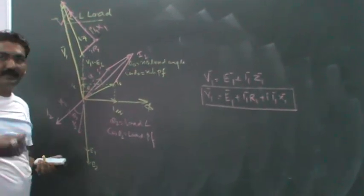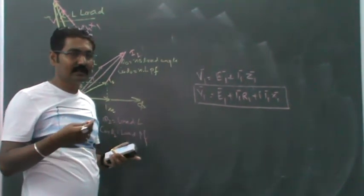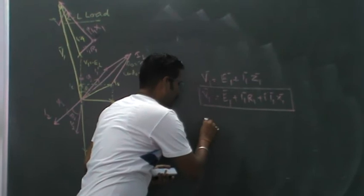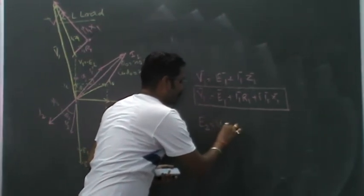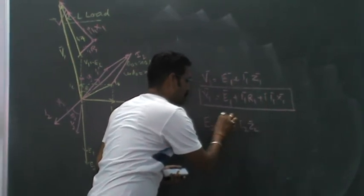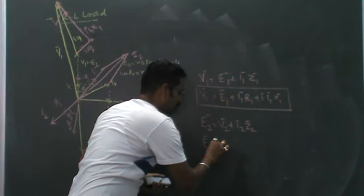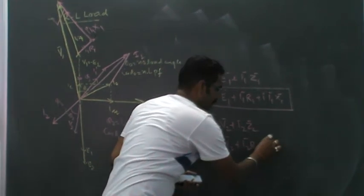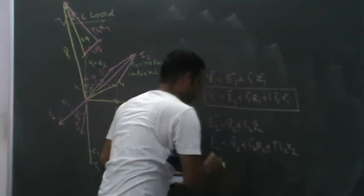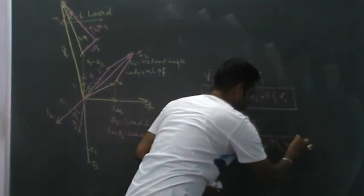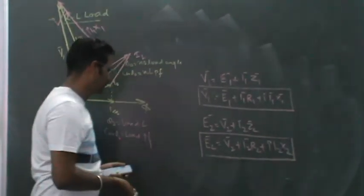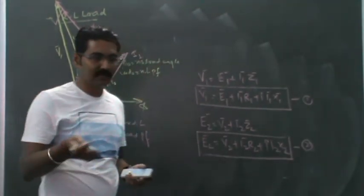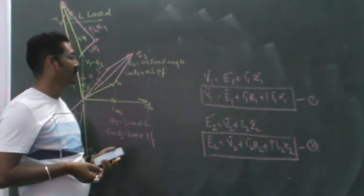Similarly, we have seen that V2 and E2 are related by the equation E2 = V2 + I2*Z2, which can be written as V2 + I2*R2 + j*I2*X2. For these equations, you may refer to my previous video.